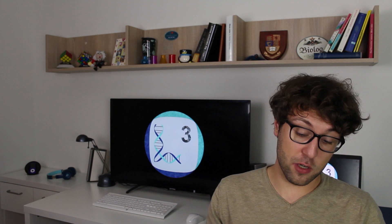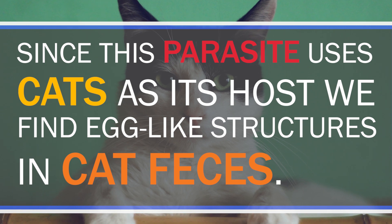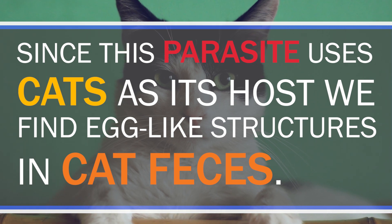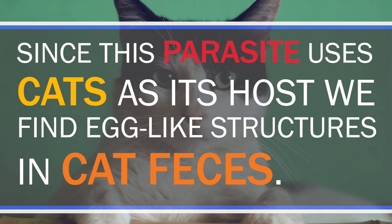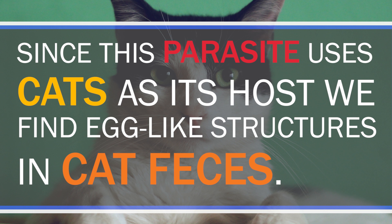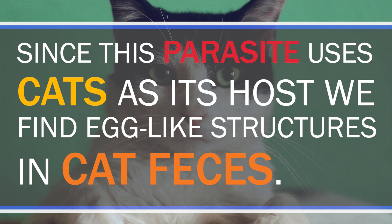This means that at least one of your family members should have this parasite. But how is that even possible? Many people contract Toxoplasma gondii by being in close contact with pets, especially cats. Since this parasite uses cats as its host, we can find egg-like structures in cat feces.